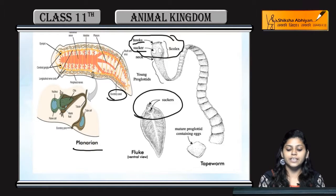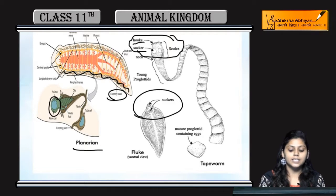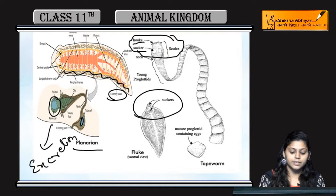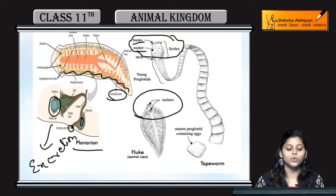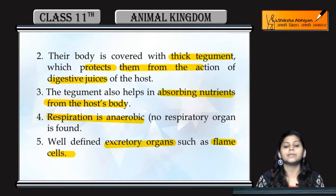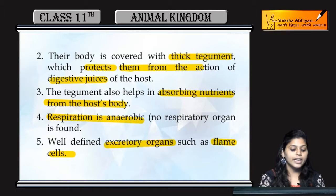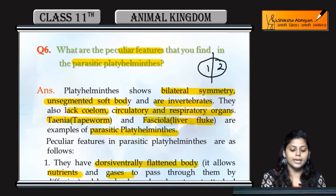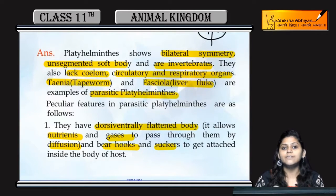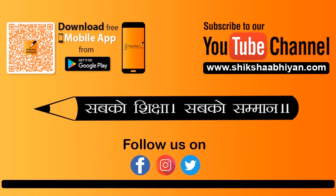In Planaria, you can see the excretory canal — this layer is the excretory canal, and it contains flame cells through which excretion takes place. Here you can see the excretory pore, from where waste material is expelled. So summarizing the features: they have thick tegument that protects from digestive juices and absorbs nutrients; respiratory organs are absent so respiration is anaerobic; the excretory organ is the flame cell; their body is dorsi-ventrally flattened; and they bear hooks and suckers to attach to the host.